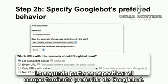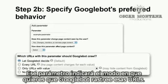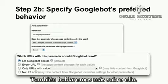Then the next part is step 2b, which is to specify Googlebot's preferred behavior. So given that parameter, how would you like Googlebot to actually crawl those URLs? We'll talk more about this as well.